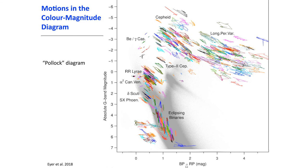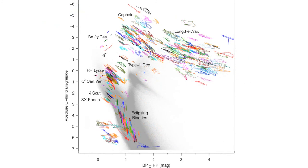We can do motions in the color magnitude diagram. Thanks to the G, BP, and RP, we can see how objects are moving around. I was thinking it looks a bit like a painting of Pollock. Here is the color magnitude diagram with the different variables, and every little loop is an object.